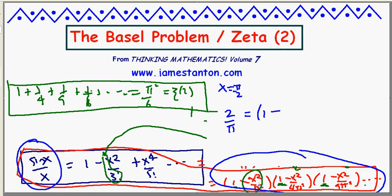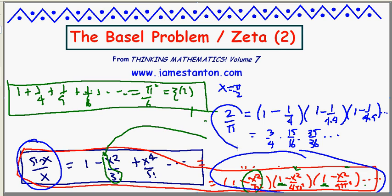Well, it's going to be 1 minus, put x equals pi over 2, pi squareds cancel, 1 over 4, times 1 minus pi squared over 2 squared, pi squareds cancel, 1 minus 1 on 4 times 4, 1 minus 1 on 4 times 9, and so on. What are these fractions? 1 minus 1 quarter is 3 quarters. 1 minus 1 sixteenth is 15 sixteenths. 1 minus 1 over 36 is 35 over 36, and so on.